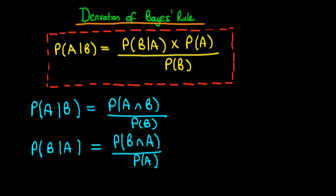If we examine the numerator of the second expression, we can reason that it's exactly the same as the numerator of the first expression, because the probability of A and B occurring is the same thing as saying the probability that B occurs and A occurs.